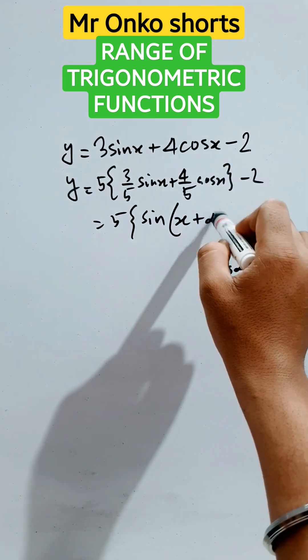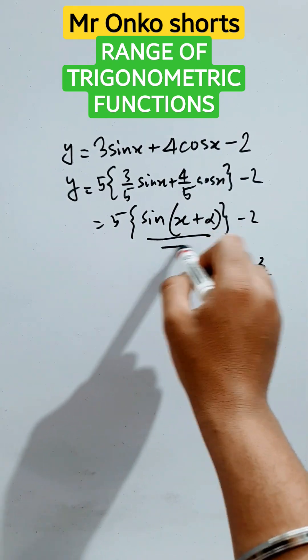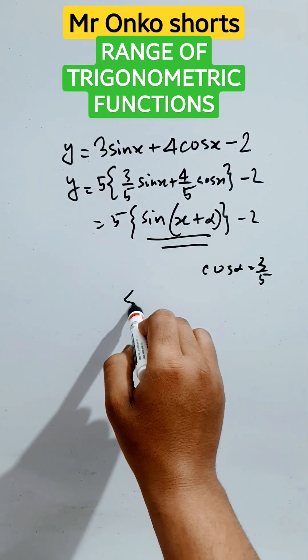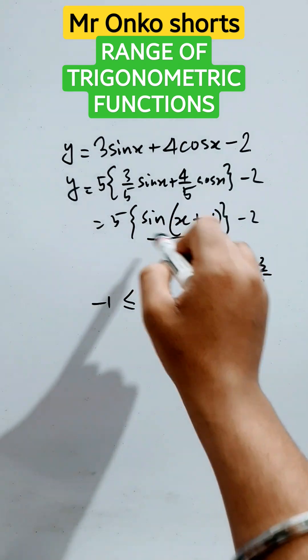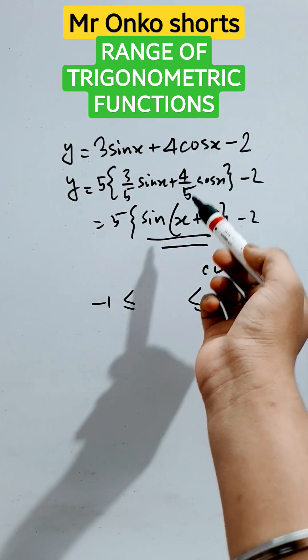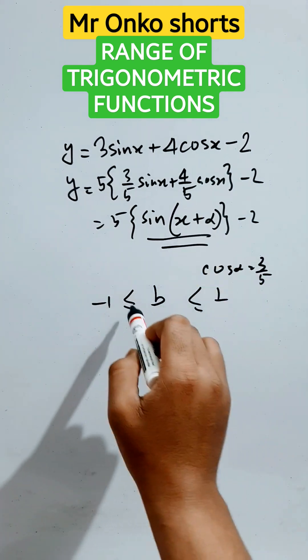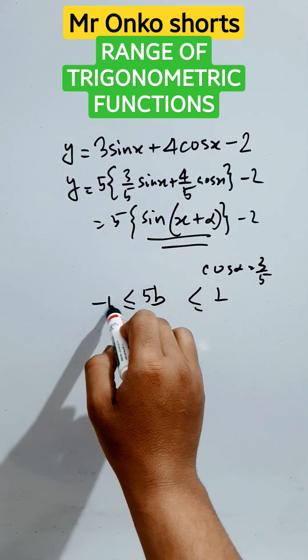So we know that sine term is obviously greater than minus one and less than one. So let's take it as B. So five B will be equals to minus five and plus five.